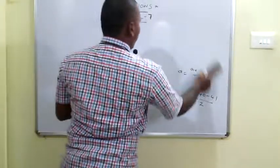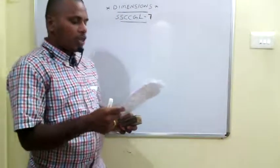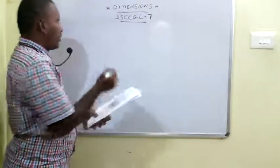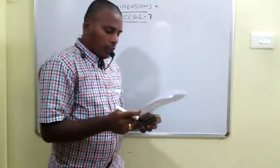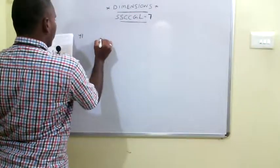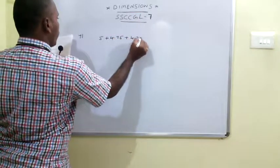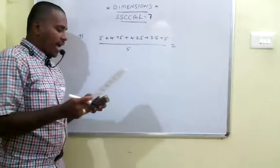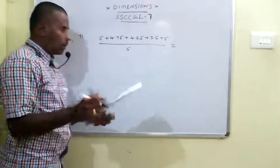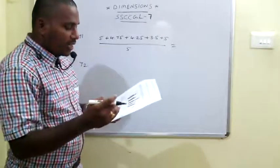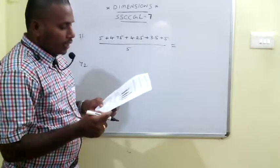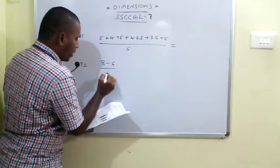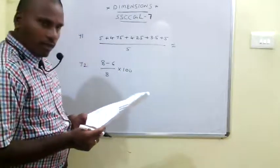Questions 71 to 75 are based on a bar graph showing production of pulses in Kharif and Rabi seasons. The 71st asks for the average Kharif production: values are 5, 4.75, 4.25, 3.5 and 5 over 5 years, giving an average of 4.5 million tons. The 72nd asks for the percentage decrease in Rabi production from 2013-14 to 2014-15: (8 - 6) / 8 × 100 = 25%.